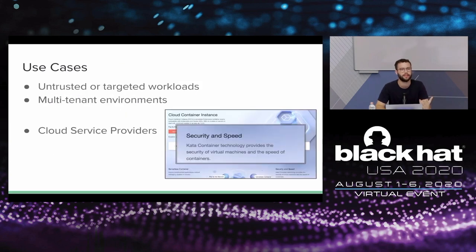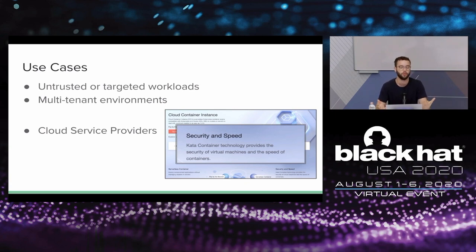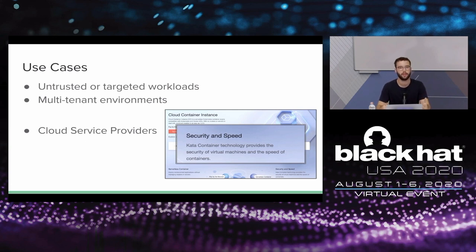The use case for Kata is first for untrusted or targeted containers where you're afraid the container might want to break out and affect the host. It's also really useful in multi-tenant environments where you want to segregate containers from several tenants. Cloud service providers are one of the prominent use cases because they run containers from multiple customers on the same platforms — those containers might be malicious, and they need strong isolation boundaries between containers of different customers. Kata fits that scenario great, and several cloud service providers are already using Kata in production to support customer multi-tenancy.